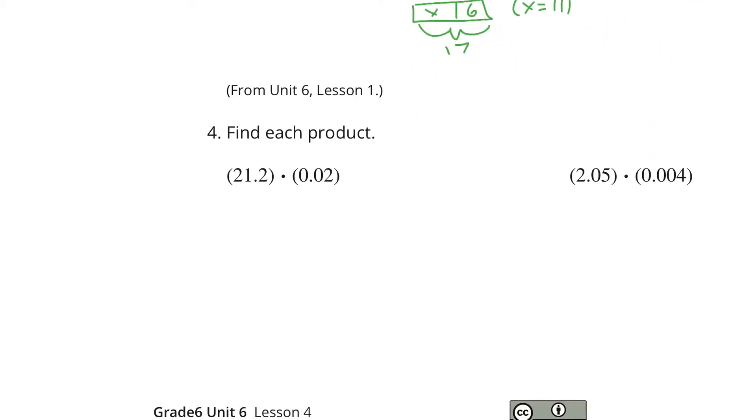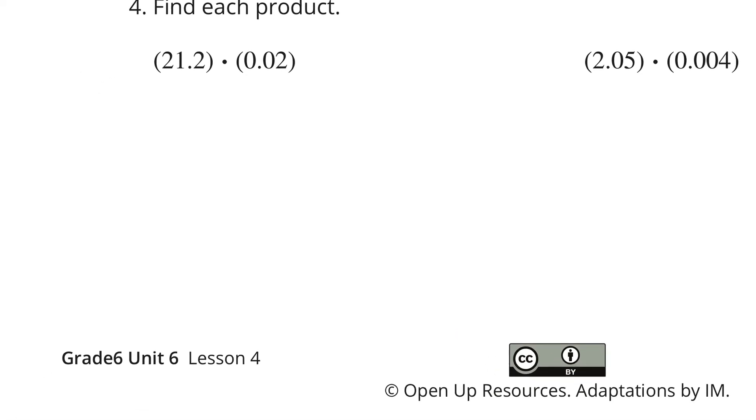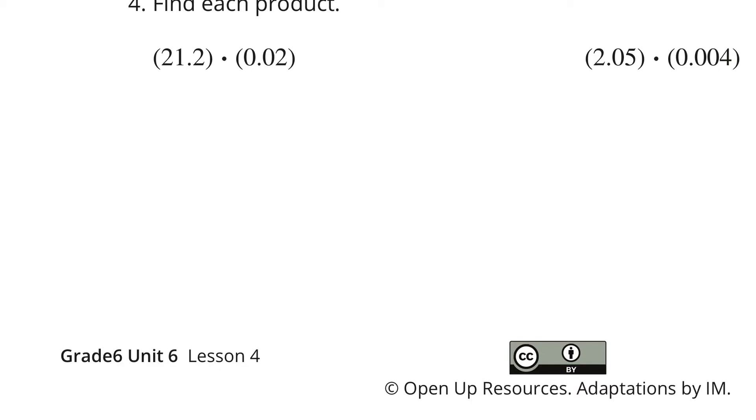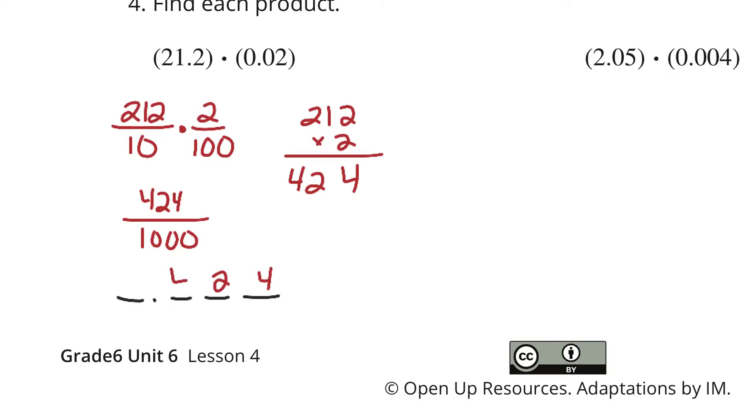As we go to number 4, find each product. We have 21 and 2 tenths times 2 hundredths. 21 and 2 tenths is the same thing as 212 tenths times 2 hundredths. If I take 212 and multiply by 2, I get 424 over 10 times 100 is 1,000. So we have 424 thousandths.